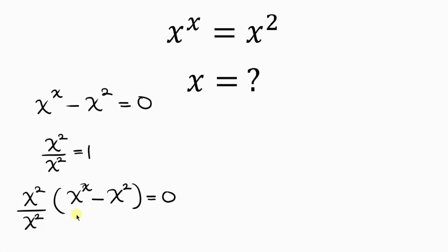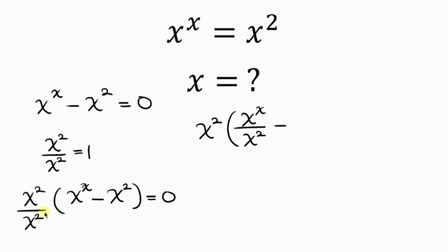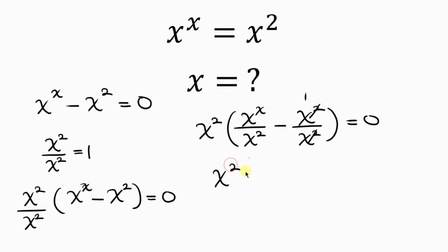Our next step is to use the denominator to multiply through, so I have x² as a numerator times x to the x over x², which simplifies, minus x² divided by 1 over x², giving x² over x squared in brackets, equal to zero.